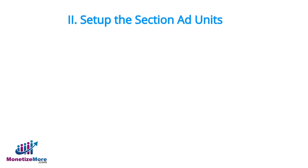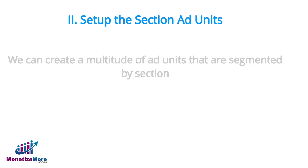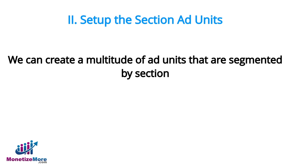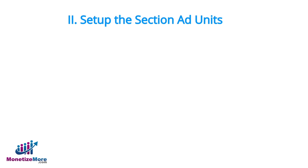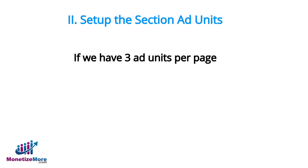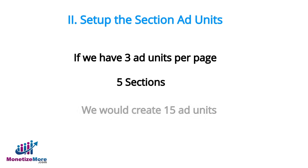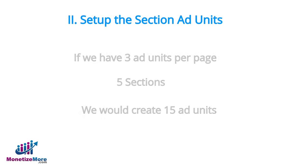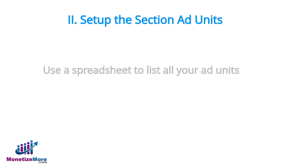We'll now move on to our secondary method of targeting ads by section. Though it takes a bit more work, we can do it by creating a multitude of ad units that are segmented by section. So, if we only have three ad units per page yet have five sections, we would create fifteen ad units. Thus, you'll want to use a spreadsheet to list all the ad units you'll want to create.